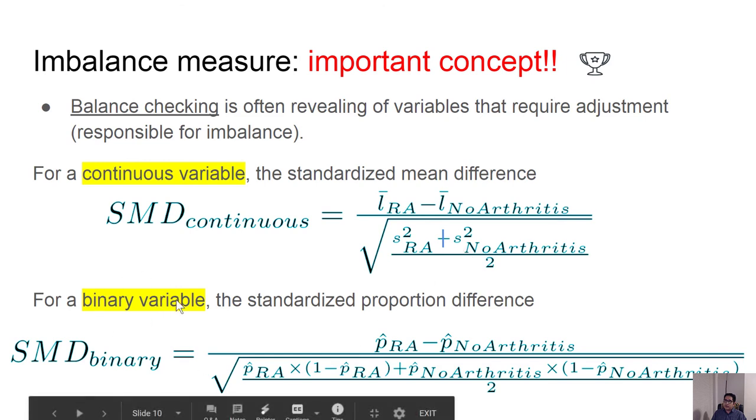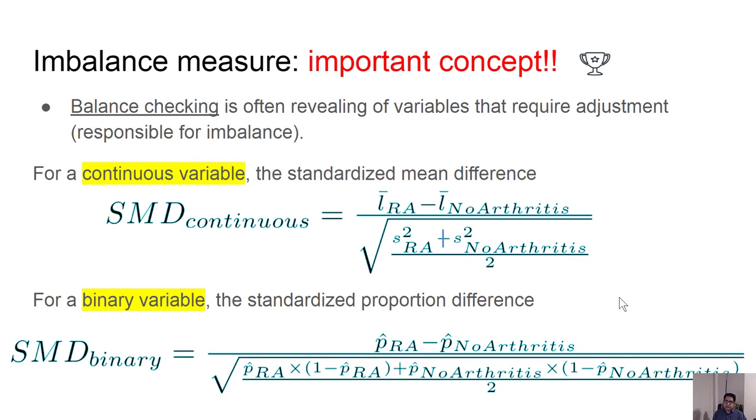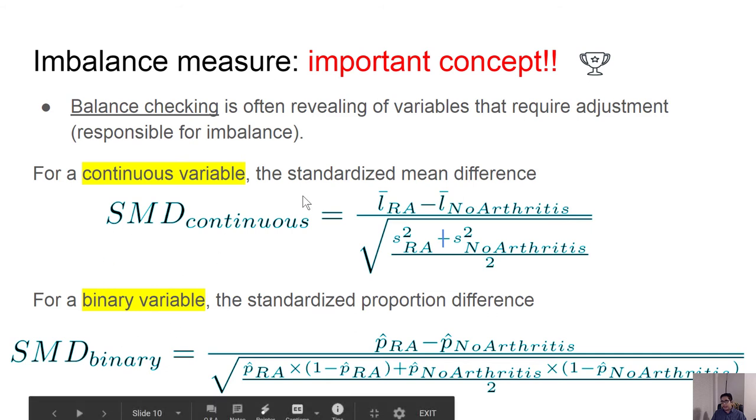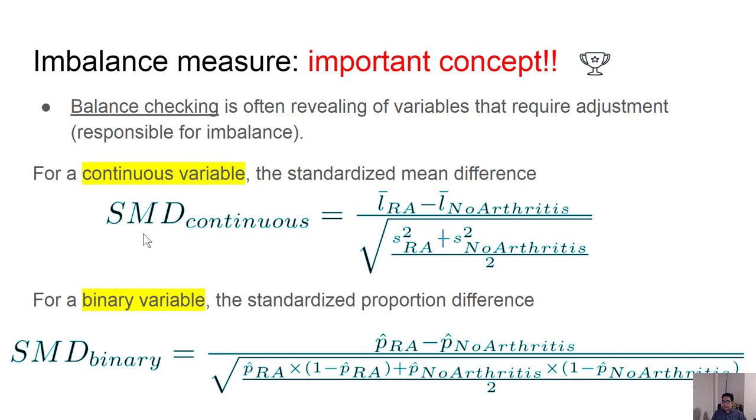If on the other hand you are dealing with a binary variable, instead of the mean you can deal with the proportions. You can take the difference in proportion and divide by the standard deviation of that. This idea is known as the standardized mean difference. It can be for the continuous variable, for the categorical variable, or the binary variable. So we are going to use this SMD or standardized mean difference idea more and more when we are trying to get some idea about whether a variable is balanced or not.